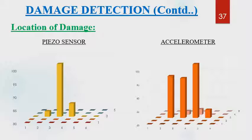Damage index values were calculated using the formula for mode shapes obtained using both piezo sensors and accelerometer before and after the damage, and plotted in MS Excel. The damage was identified accurately in the case of piezo sensors. At the location of the damage — the 15th element — the damage index value is very high for piezo sensors, whereas for the accelerometer the damage index value is not maximum at the damaged element. Therefore, piezo sensor is more effective in detecting damage compared to accelerometer.